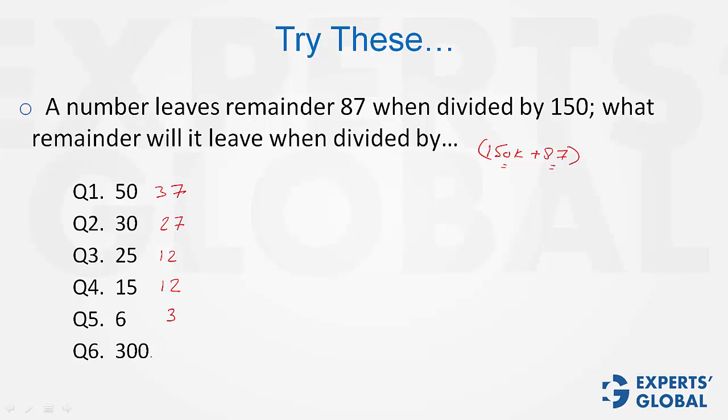With 300, 150K can give 150 itself when K is odd, and 150K can give 0 when K is even. Therefore, it is 150 or 0 plus 87, because 87 when divided by 300 will give 87 remainder. So in this case, there are two possible answers: 150 plus 87, which is 237, or 0 plus 87, which is 87.